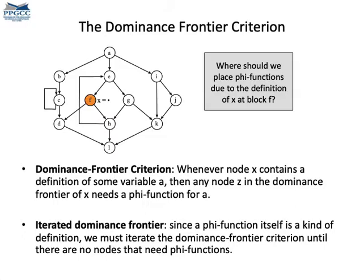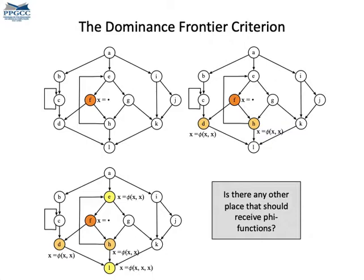Let's clarify these notions with an example. In this program, we have a definition of x at node f. The dominance frontier of f includes nodes d and h. The dominance frontier of d includes l, and the dominance frontier of h includes l as well, but it also includes e. So we need to insert phi functions in all these nodes, marked here in the bottom figure.